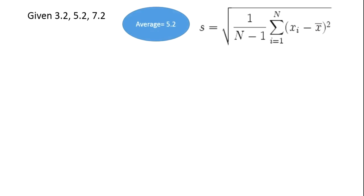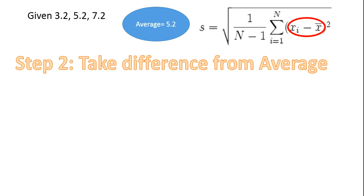In the second step, we have the average, then we take the difference from the average. The first measurement value 3.2 minus 5.2 will give minus 2, and 5.2 minus 5.2 is 0, and 7.2 minus 5.2 will be giving 2. That is, we have got this value.